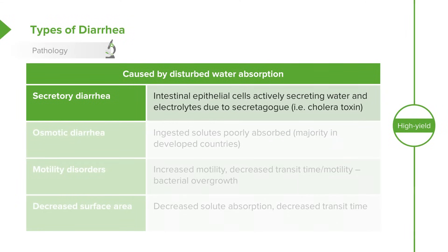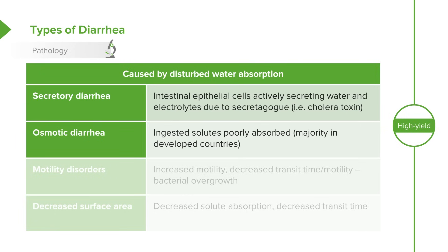Secretory diarrhea is when intestinal epithelial cells are actively secreting water into the intraintestinal compartment, and electrolytes are going along with it, causing water loss out into the stools through osmotic forces. The classic example is cholera toxin. It is extremely rare to encounter secretory diarrhea in children in developing countries. Osmotic diarrhea is much more common.